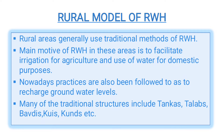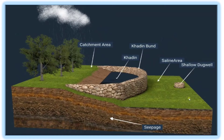Nowadays these structures are also made under the MGNREGA scheme in villages. In the next figure, it is clearly shown that this is the catchment area and where rain is falling — that goes to the khadin.